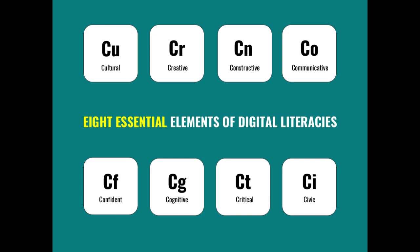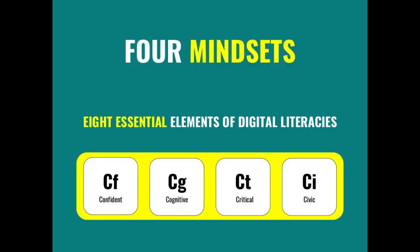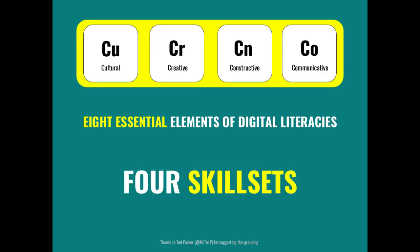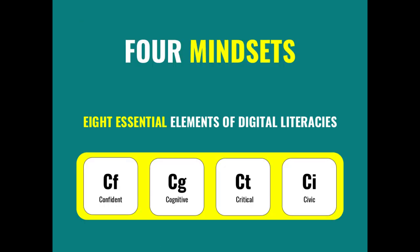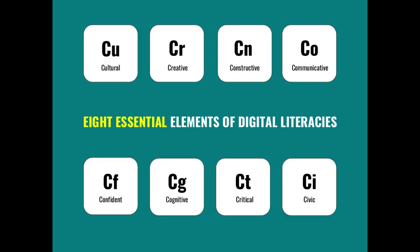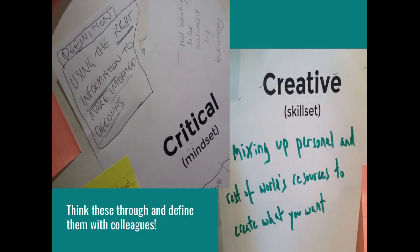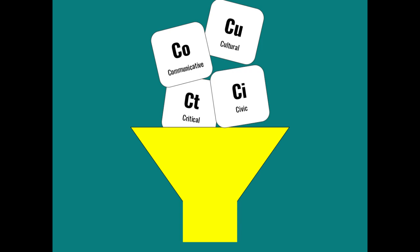A guy called Ted Parker — Mr. Ted P on Twitter — framed this after I published my work in terms of four skill sets and four mindsets. What he did was break it down into the skills you need and the mindsets you need to develop digital literacies. If you want to develop digital literacies in your particular context, think about those skill sets and mindsets, but also think about how you can talk about them with your colleagues. What does it mean to be critical in your particular context? What does it mean to be digitally creative? Come up with those yourselves, negotiate them, don't just take them off the shelf. Then mash them together — think about them like chemical elements and what happens when you combine them — and come up with activities and programs as a result.